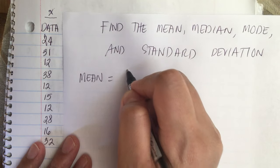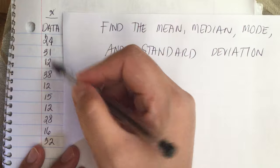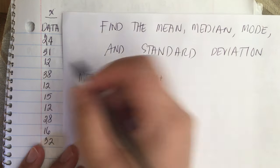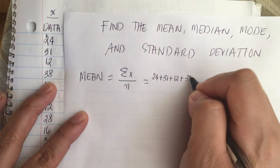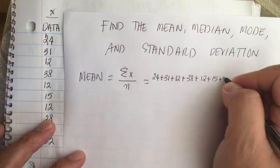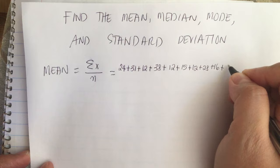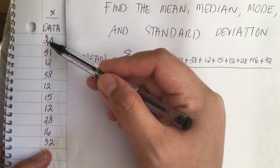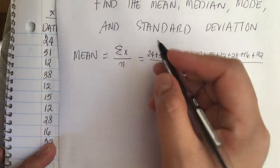To find the mean, the formula is the sum of x divided by n, the number of data points. So we have 24 + 31 + 12 + 38 + 12 + 15 + 12 + 28 + 16 + 32, divided by n. Counting the data points: 1, 2, 3, 4, 5, 6, 7, 8, 9, 10 — so n equals 10.